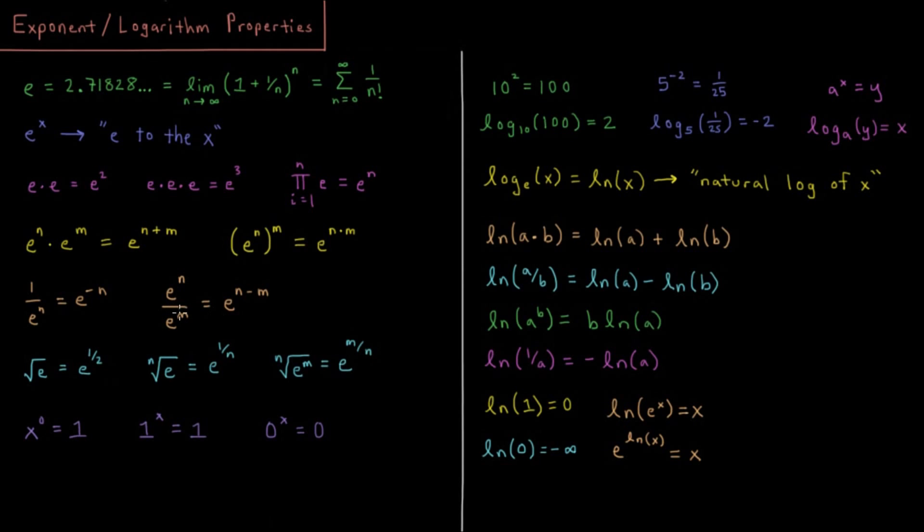Then we can have non-integer values or things like roots. We have the square root of E is equal to E to the 1 half, because if I do the square root of E times the square root of E, I should get E. So according to this exponent sum rule, I have E to the 1 half plus E to the 1 half equals E.